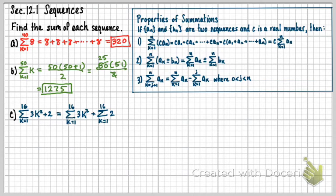I can also use now this property 1 that says if I have this, I can actually pull the c outside of the sum. So that's what I'm going to do now. I'm able to pull that 3 out that I had here to the outside because of that property 1 there.